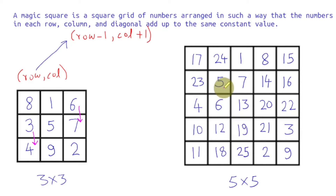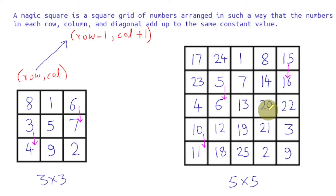Similarly, in the 5 by 5 magic square, whenever you reach a multiple of 5, you move down. For example, after 5 we move to 6. The next multiple of 5 is 10; after 10 we move to 11, which is one cell down. After 15, we move to 16. After 20, we move to 21. I hope this filling pattern is clear. If not, I'd suggest rewinding the video and checking it out again.